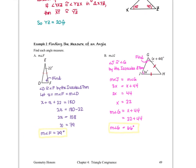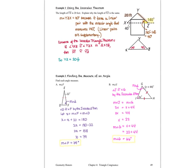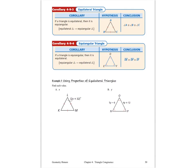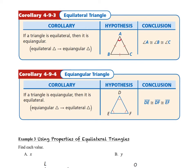We can see how useful these theorems are, and we're about to get a couple more corollaries. Corollary 4-9-3, the equilateral triangle corollary, says if a triangle is equilateral, then it is equiangular. Corollary 4-9-4, the equiangular triangle corollary, says if a triangle is equiangular, then it is equilateral.